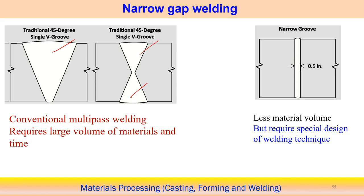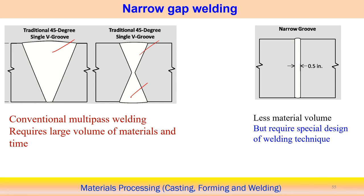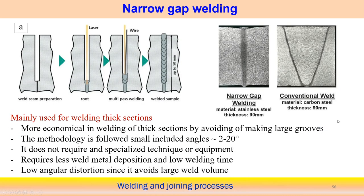Without changing the process, a different approach can be taken: instead of a large groove, keep a very small gap between two high-thickness plates. In this case, less material volume is needed to fill the gap and join the high-thickness material. However, this requires a very specific special design of the welding technique. The purpose of narrow gap welding is to require less material volume deposition.